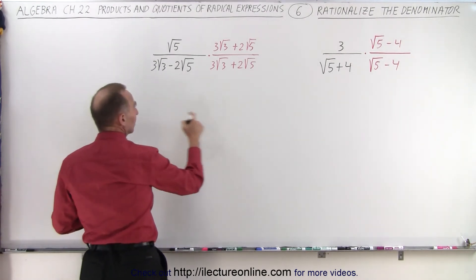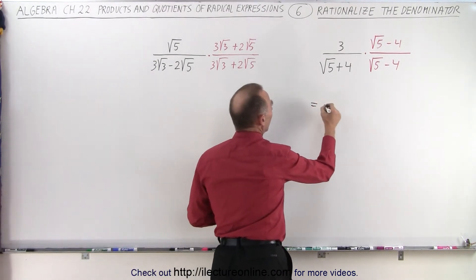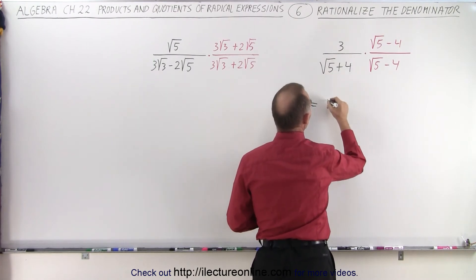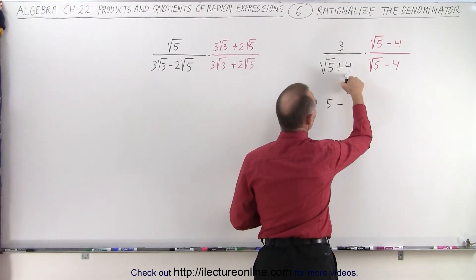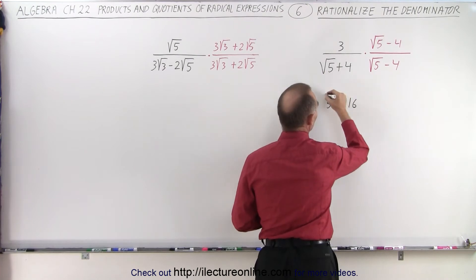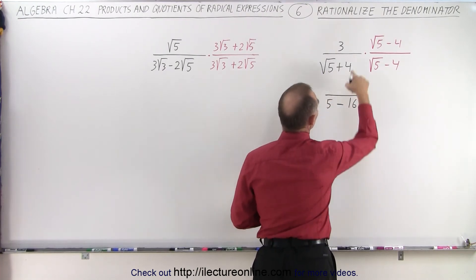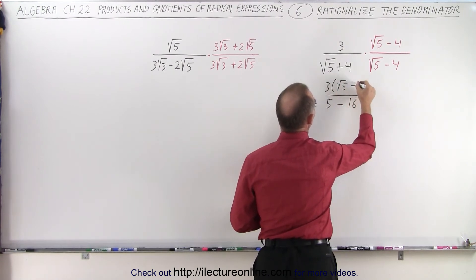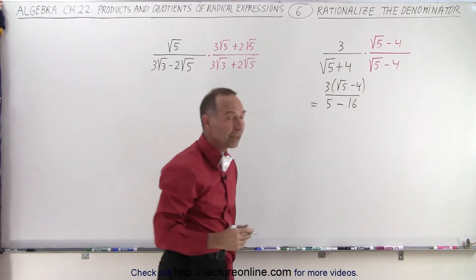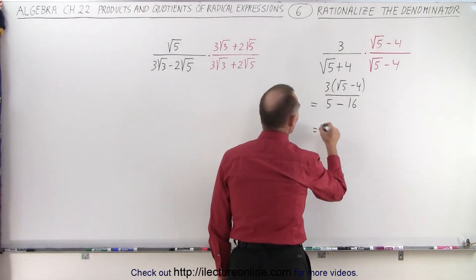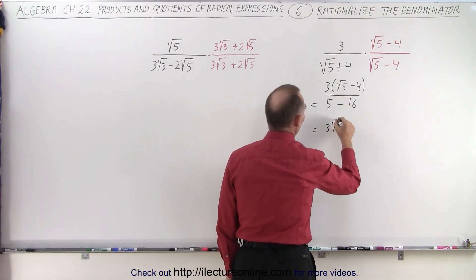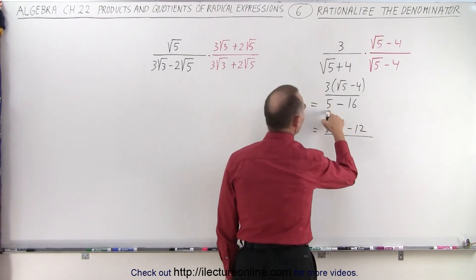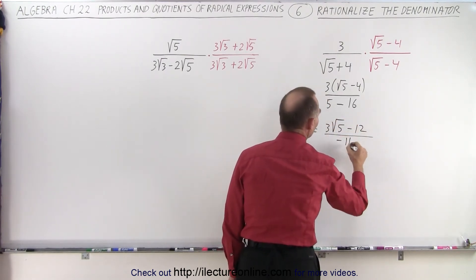So the denominator — let's start with this one here — will simply be the square of the first term, which is 5, minus the square of the second term, which is 16. So that's going to be the new denominator. In the numerator, we end up with 3 times the square root of 5 minus 4, and we'll have to multiply that out. So that becomes 3 times the square root of 5 minus 12, divided by 5 minus 16, which is minus 11.